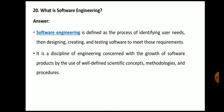The last question: what is software engineering? Software engineering is defined as the process of identifying user needs, then designing, creating, and testing software to meet those requirements. It is a discipline of engineering concerned with the growth of software products through the use of well-defined scientific concepts, methodologies, and procedures. These are the top 20 important questions commonly asked in technical interviews for computer engineers.